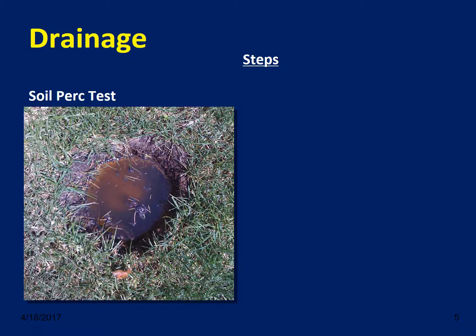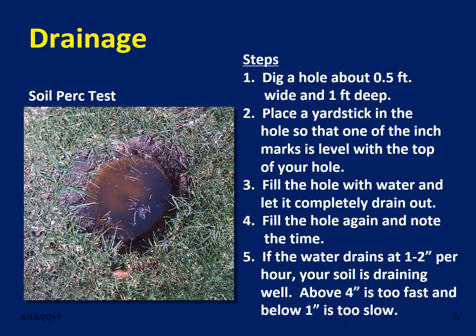One thing we can do to look at the relative ability of our soil to provide good water movement is to do a very simple perk test. These are the different steps: essentially, you're going to dig a hole, fill it with water, and look to see how long it takes for that water to drain out of the hole. If the water drains at one to two inches per hour, the soil is draining well. If it's too fast, then likely you've got a lot of larger particles, perhaps sandy particles, which is allowing the water to drain through.